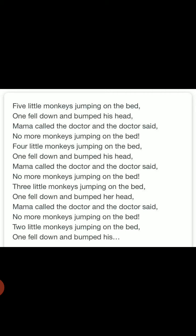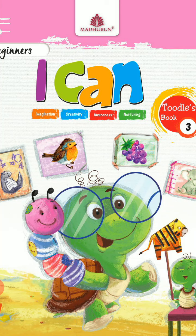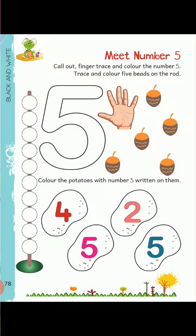Students, once again open your I Can Beginner Book 3 and go to page number 78. Here we have an activity to meet number 5. In this page, first we have to colour in the number 5 with our finger. Pick your watercolors, dip your finger into the colour, and trace the whole image of number 5.